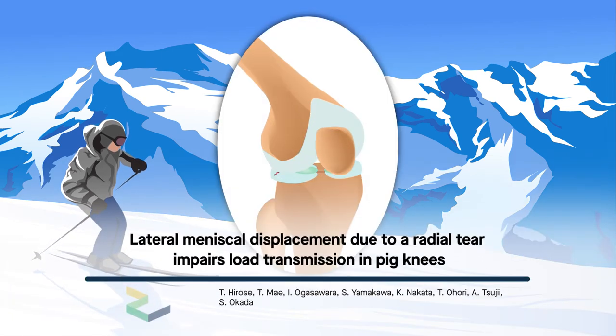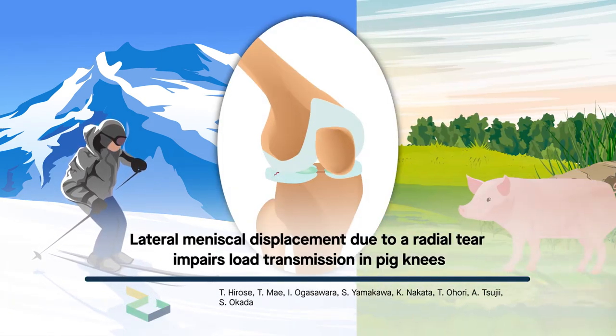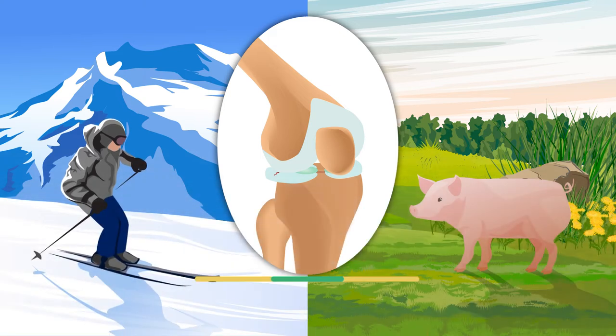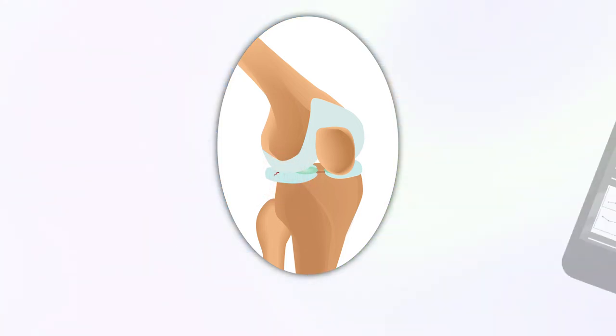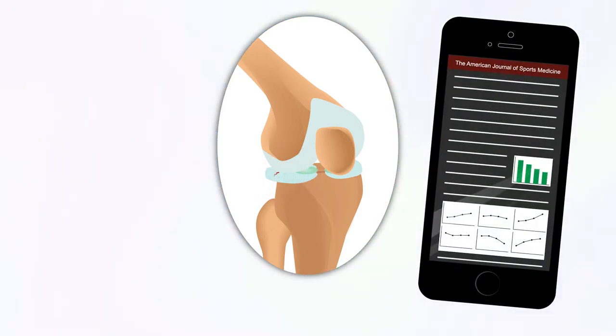A tear in the knee meniscus can cause this shock-absorbing structure to shift from its normal position. A new study on pig knees suggests that even a small degree of meniscal displacement can have a big impact on meniscal load transmission, increasing stress to the knee joint. The findings are published in the American Journal of Sports Medicine.